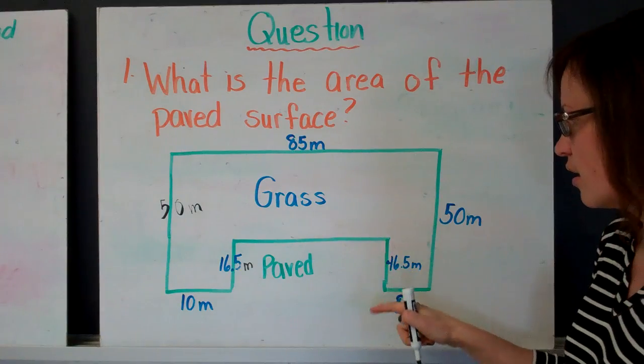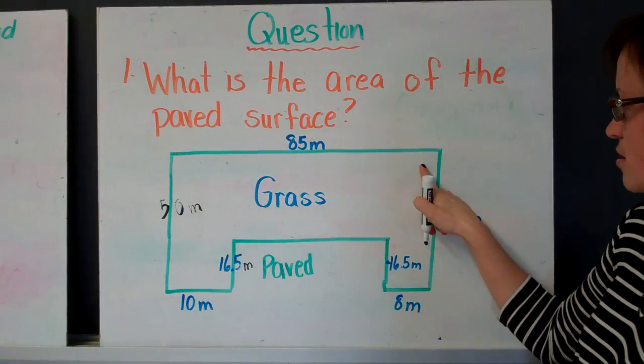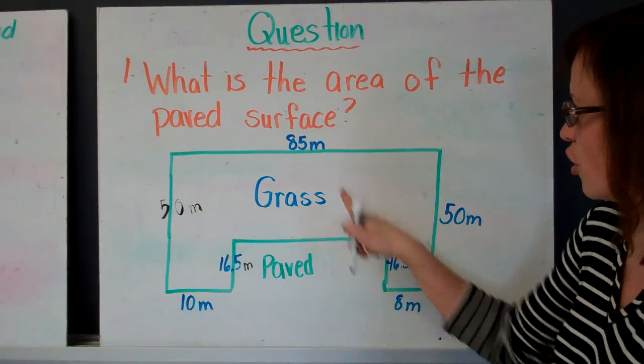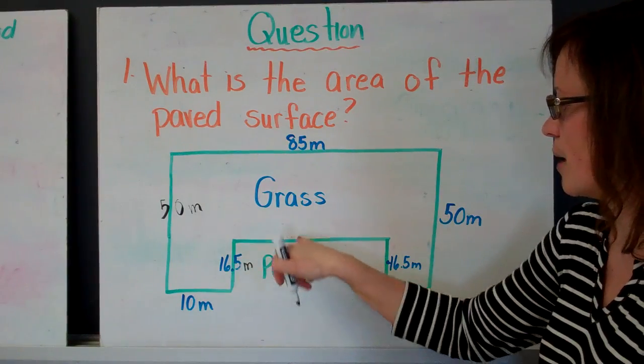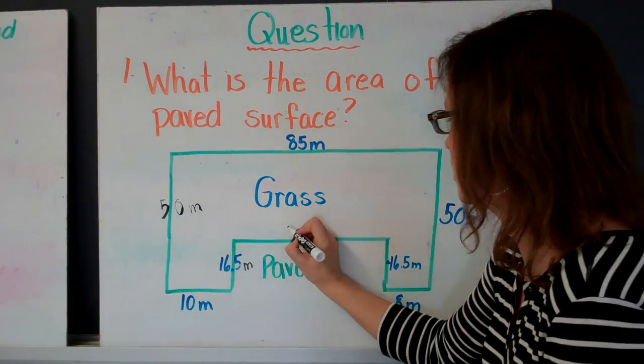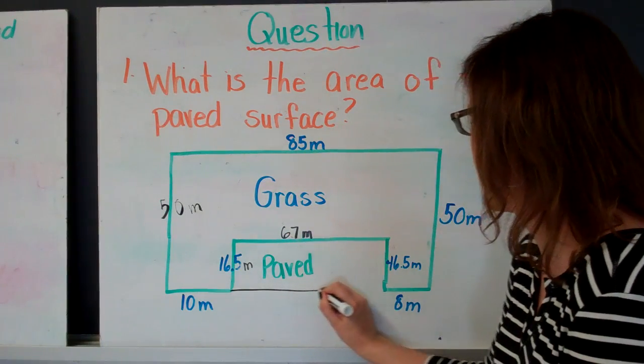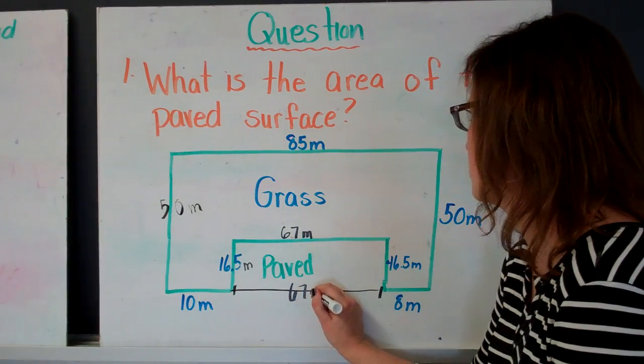We're missing a dimension here. We know that we have the length up here. The full length of that side is 85 meters. We have some dimensions down here. So if I take this one and subtract these two numbers, I'm going to get this length here, which is 67 meters. So I know that from here to here is also 67 meters.